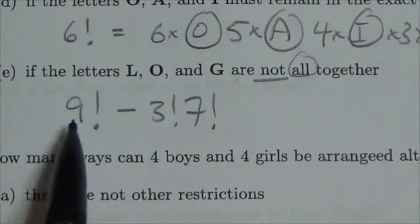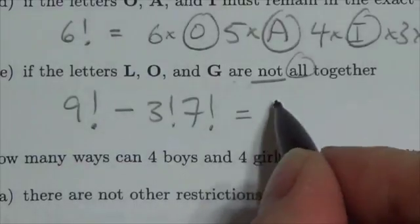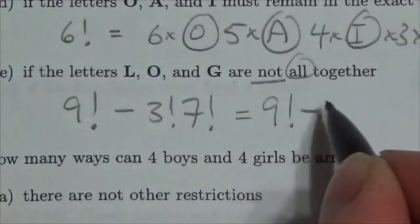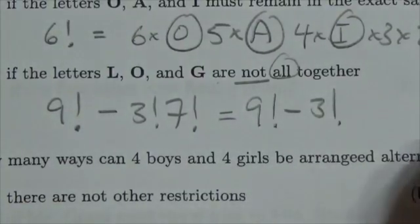And so, this would be nine factorial minus three factorial seven factorial. Another way to think of it, and this would be equal to nine factorial minus three factorial. Again, there's the number of ways of permuting the letters, L, O, G.